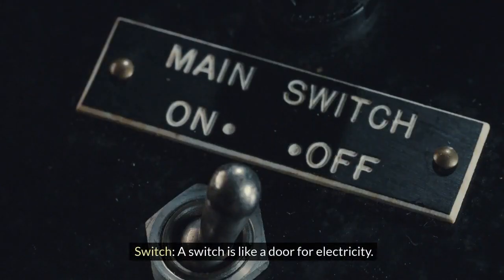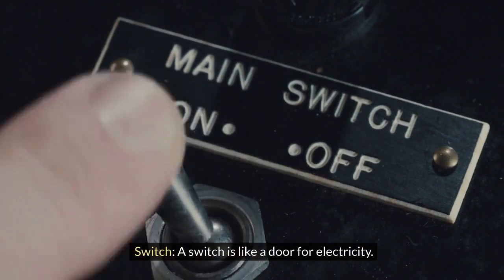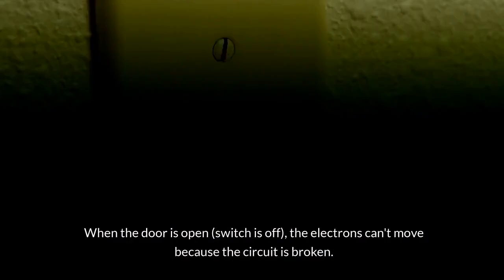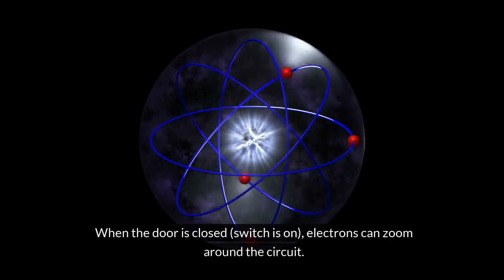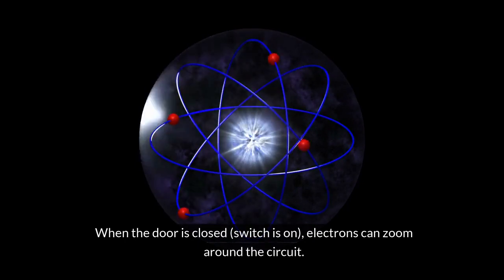Switch, a switch is like a door for electricity. When the door is open, switch is off, the electrons can't move because the circuit is broken. When the door is closed, switch is on, electrons can zoom around the circuit.